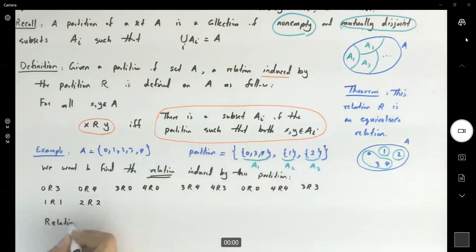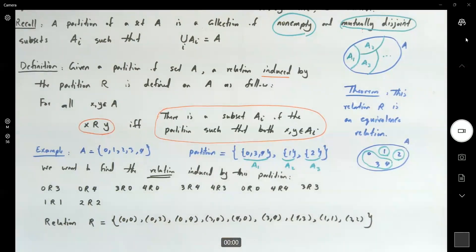Our relation R is equal to... So we are going to list all of these numbers: (0, 0), we have (0, 3), we have (0, 4), we have (3, 0), we have (4, 0), we have (3, 4), we have (4, 3). We have, let's see, (1, 1), (2, 2).